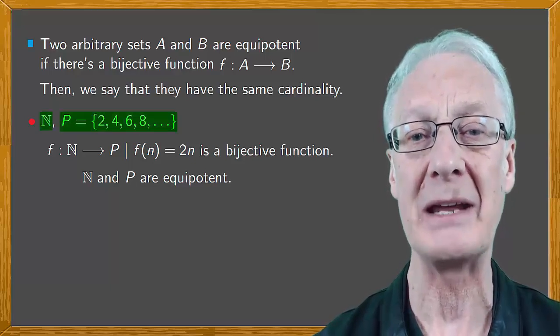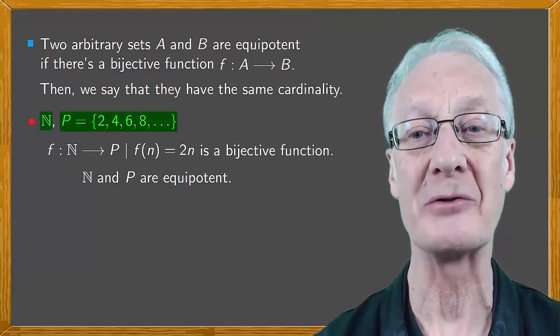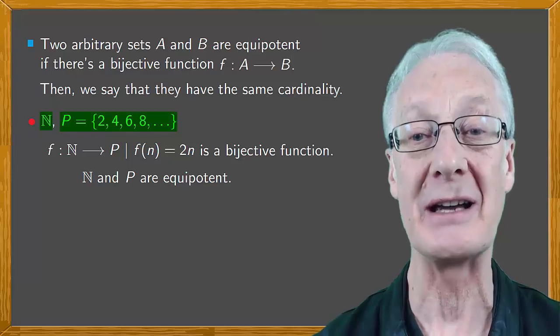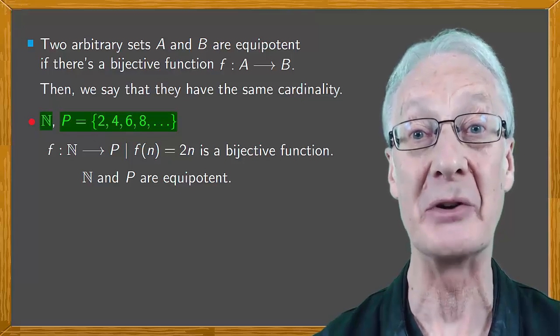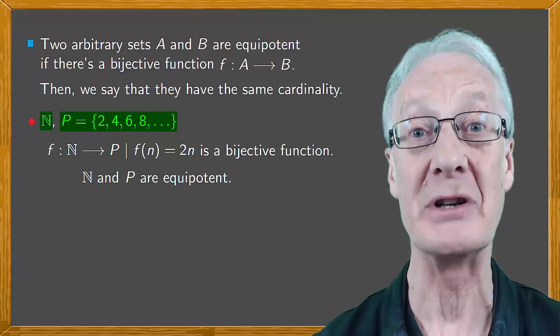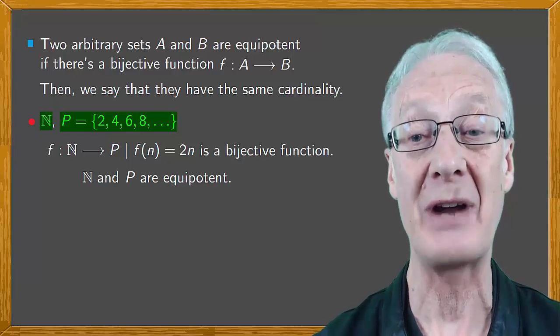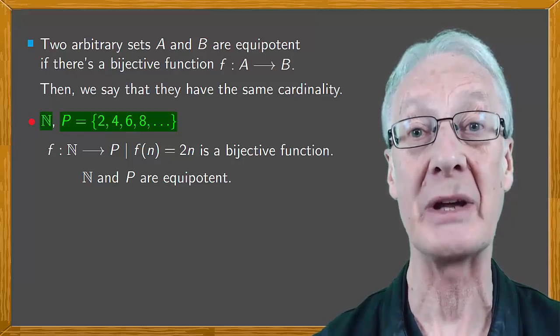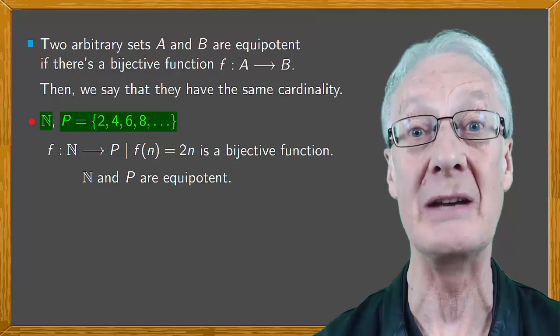How can that be, that the set of all natural numbers is equal in size to the set of even numbers? It seems counterintuitive. Yet, it's correct. One of the strange results we get when we start dealing with infinite sets.